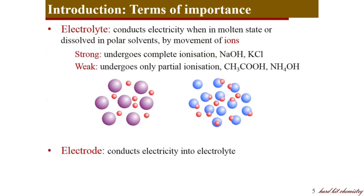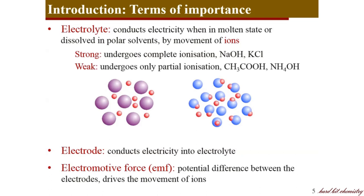We also have electrodes in an electrochemical system — they conduct electricity into the electrolyte and are mostly inert metal rods. What urges the ions to move? It is the potential difference between the electrodes that urges the ions to move through the electrolyte. This potential difference is called EMF — the electromotive force.